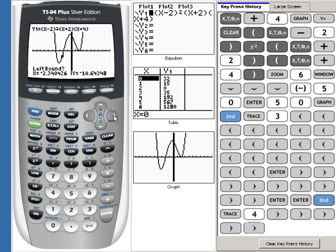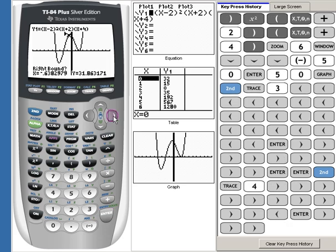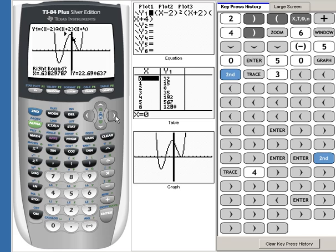And this time we're going to arrow over so that we're on the left side of it and hit enter. And then we're going to arrow until we're on the right side again and hit enter. And then enter for guess. So we have a maximum at negative 0.31 and then 33.28. Again, make note of this because we'll have to put it on our paper as our maximum.